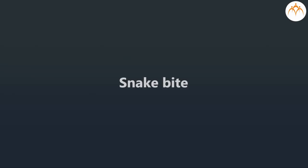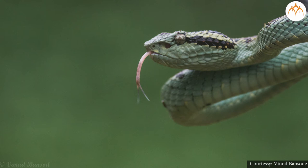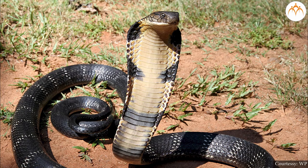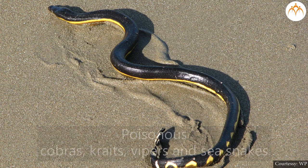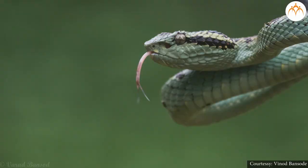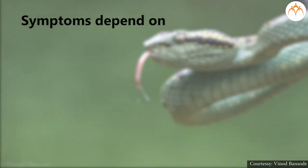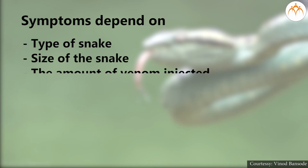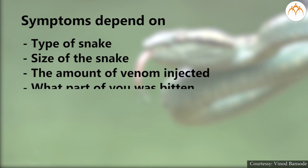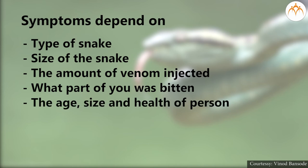Snake bite — have you seen a snake and do you know about snake bites? There are 2,000 species of snakes, but not all are poisonous. Some snakes like cobras, kraits, vipers, and sea snakes are poisonous. Non-poisonous snake bites cause punctures that are slightly painful. Different symptoms are seen when a snake is poisonous, and they depend on the type and size of the snake, the amount of venom injected, what part of the body was bitten, and the age, size, and health of the person.